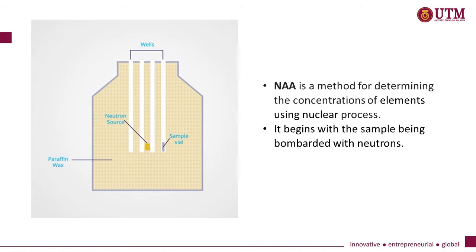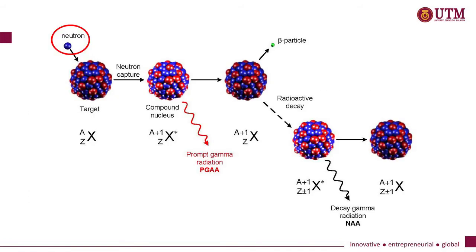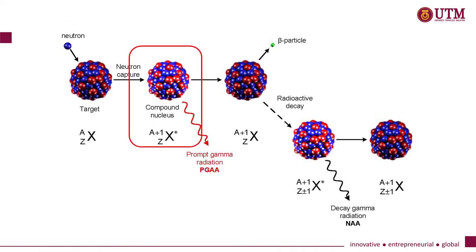It begins with the sample being bombarded with neutrons. When the nucleus of a sample atom captures a neutron, the neutron becomes strongly bounded in the nucleus. This binding releases energy that is shared by the entire nucleus.